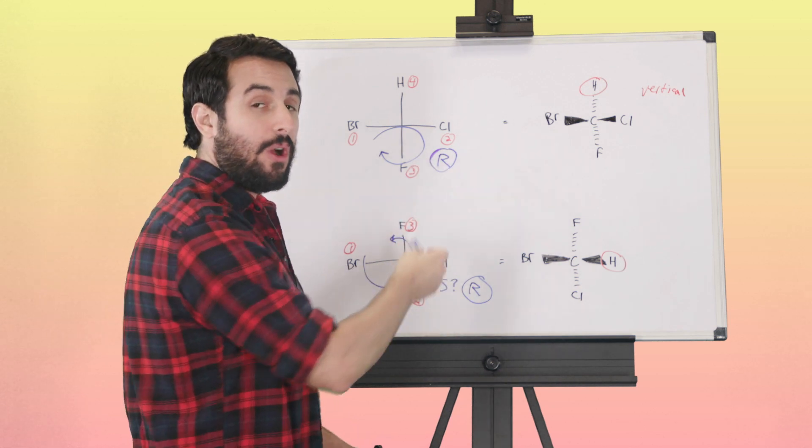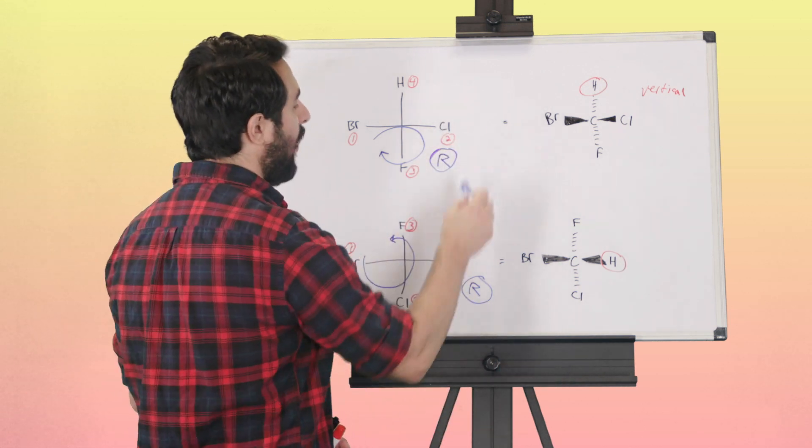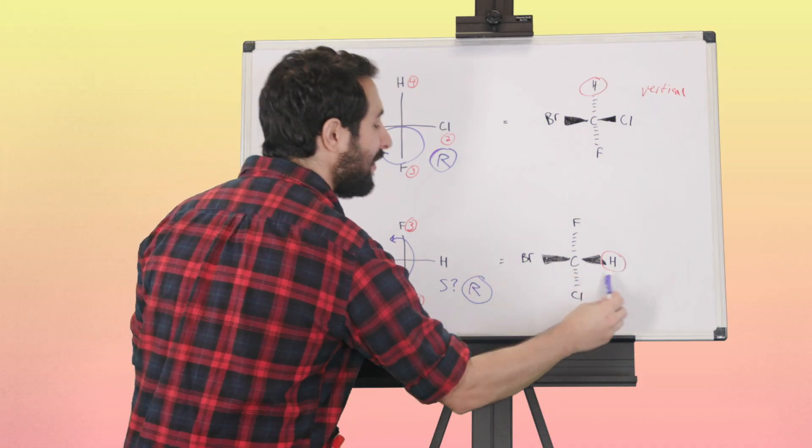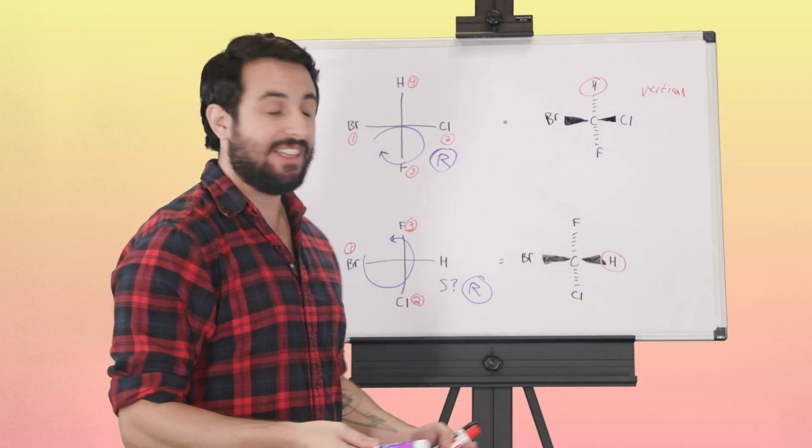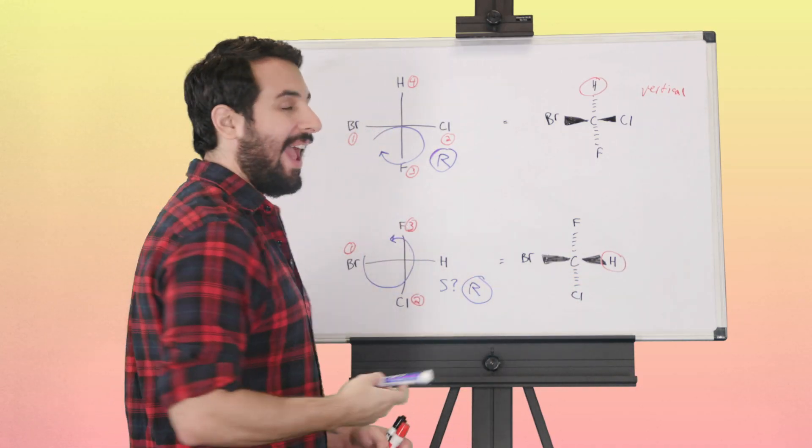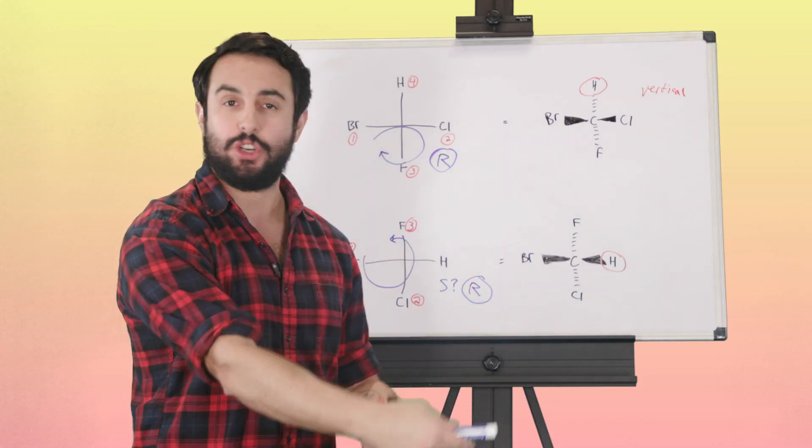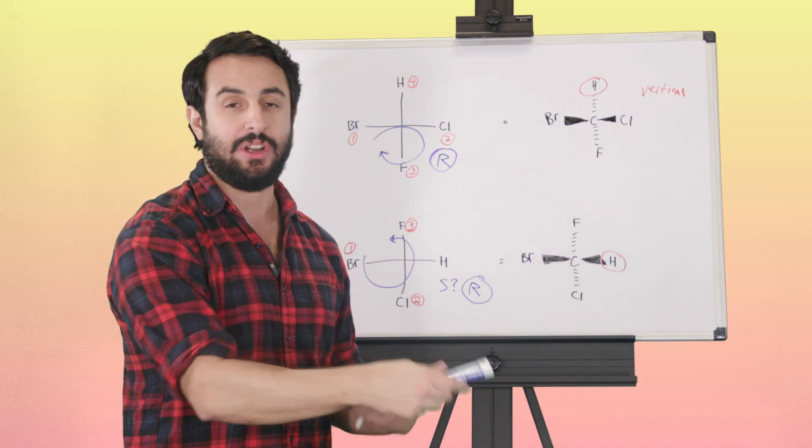However, when the lowest priority substituent is on a horizontal bond, that is the case where we trace from one to two to three, and then the easiest way to do it is just do that and then invert your answer to the other option.